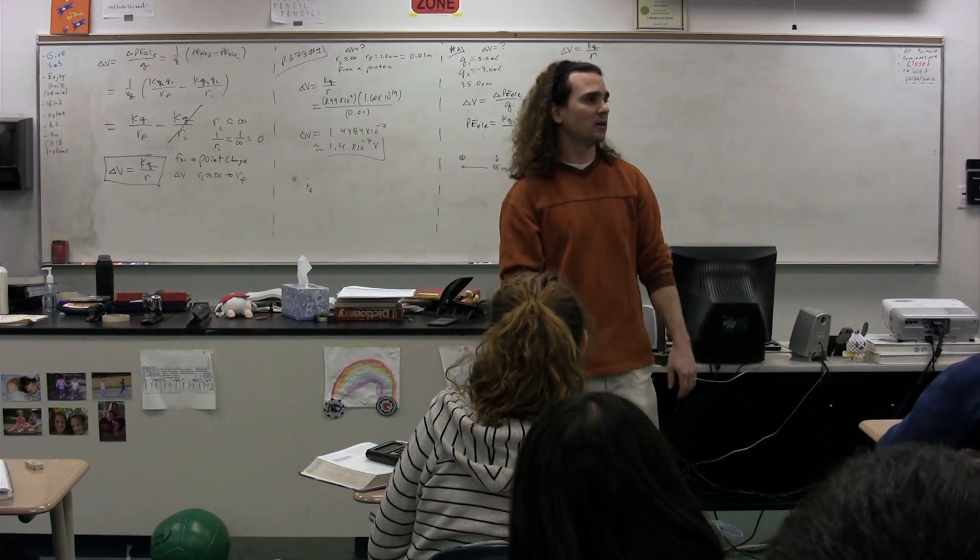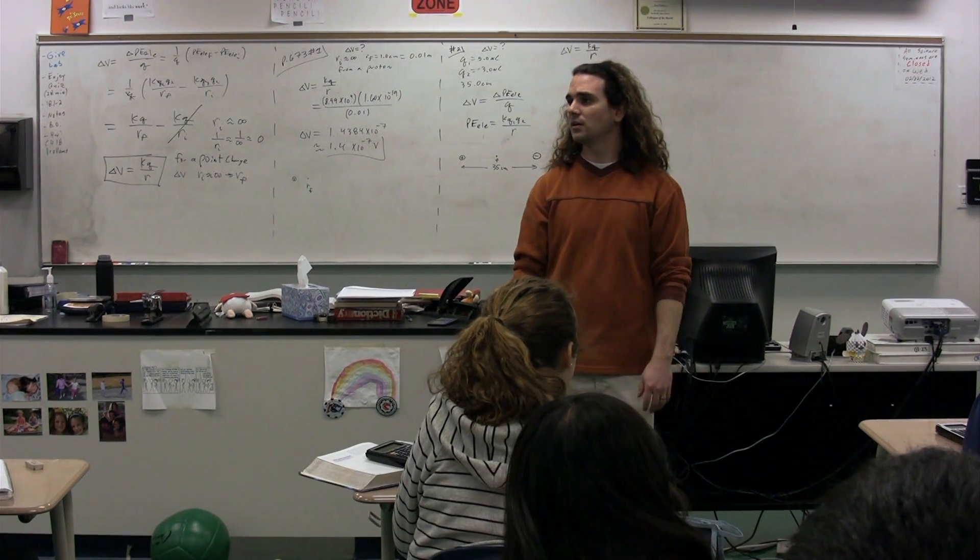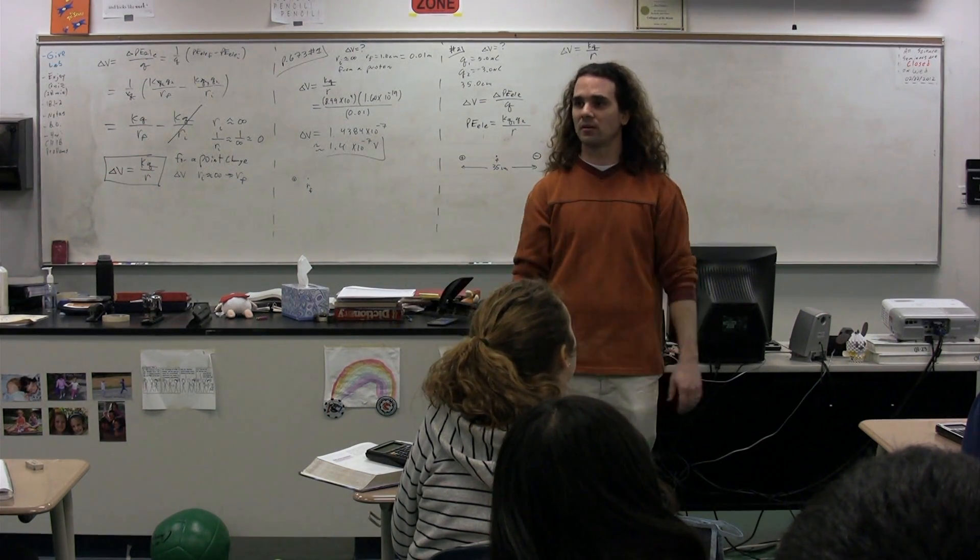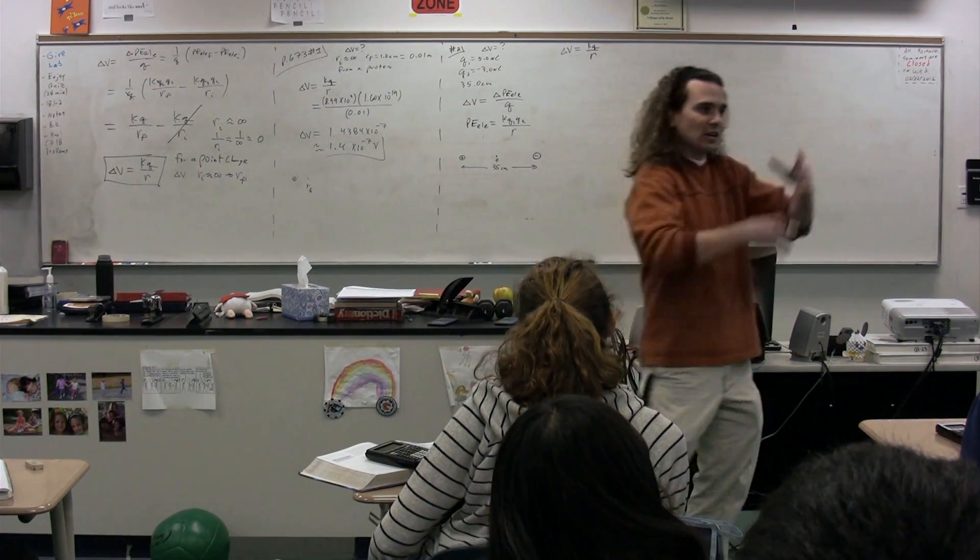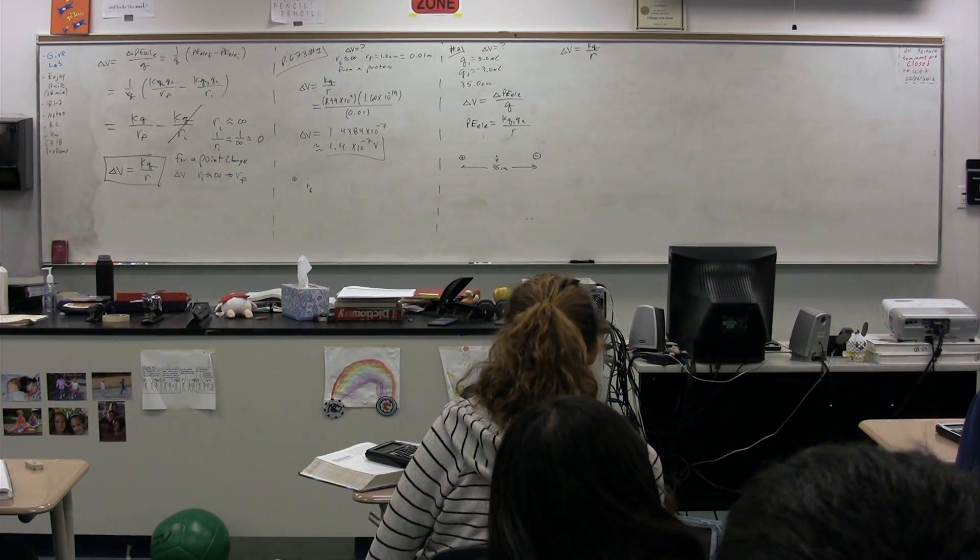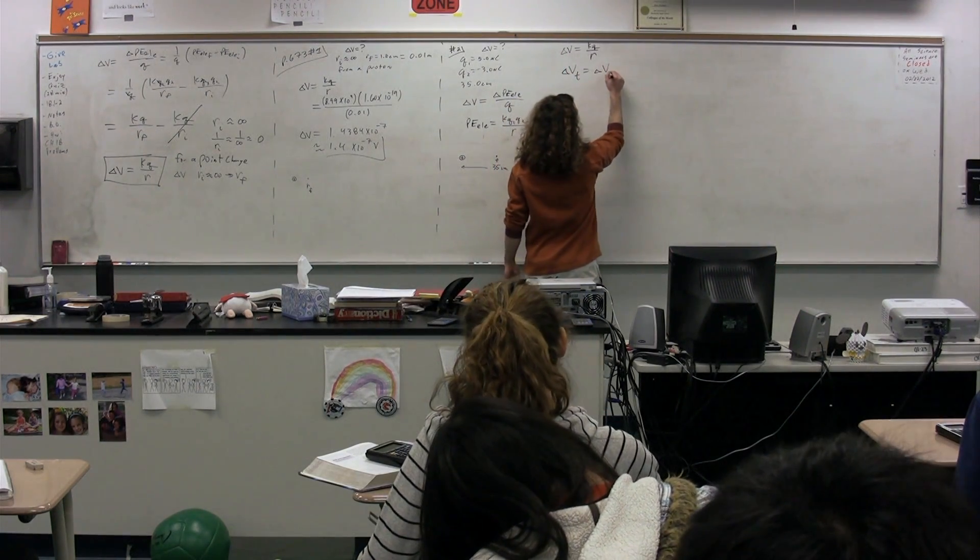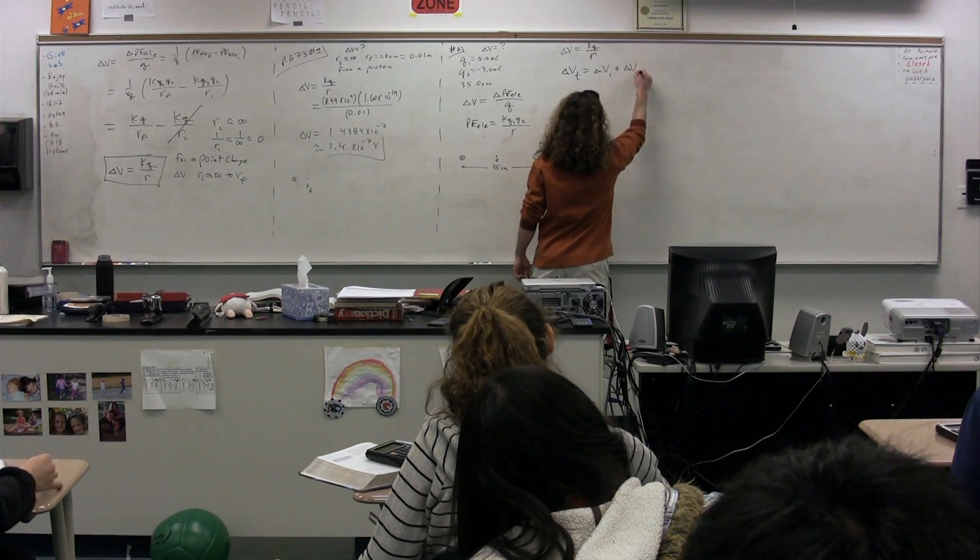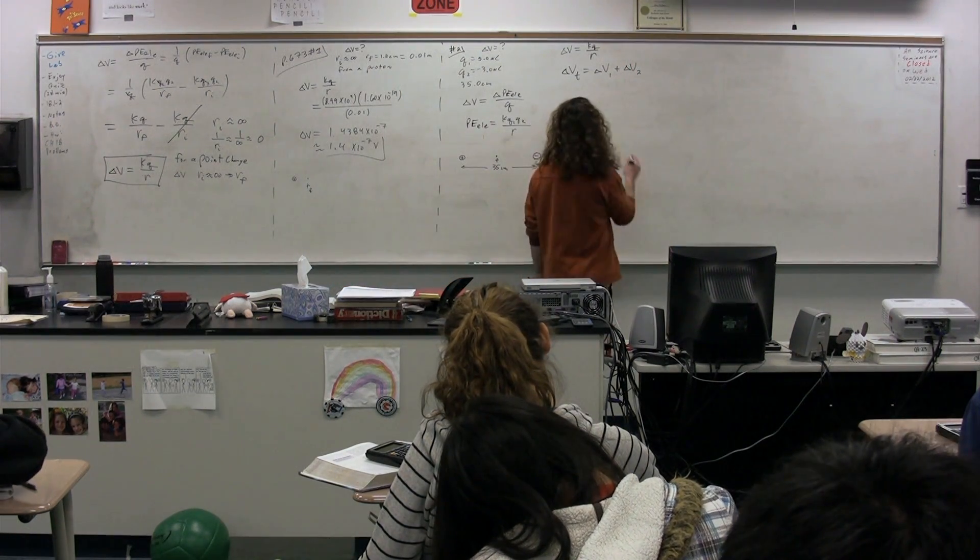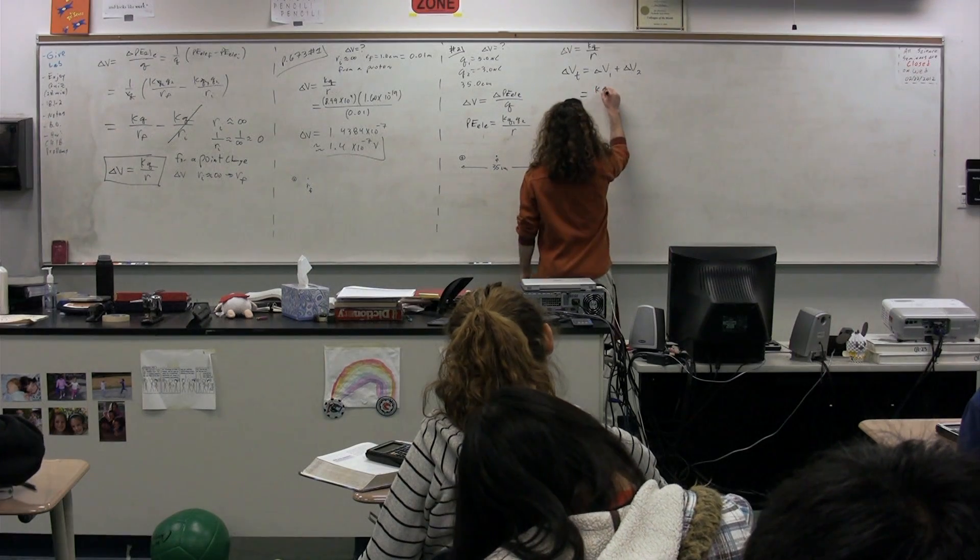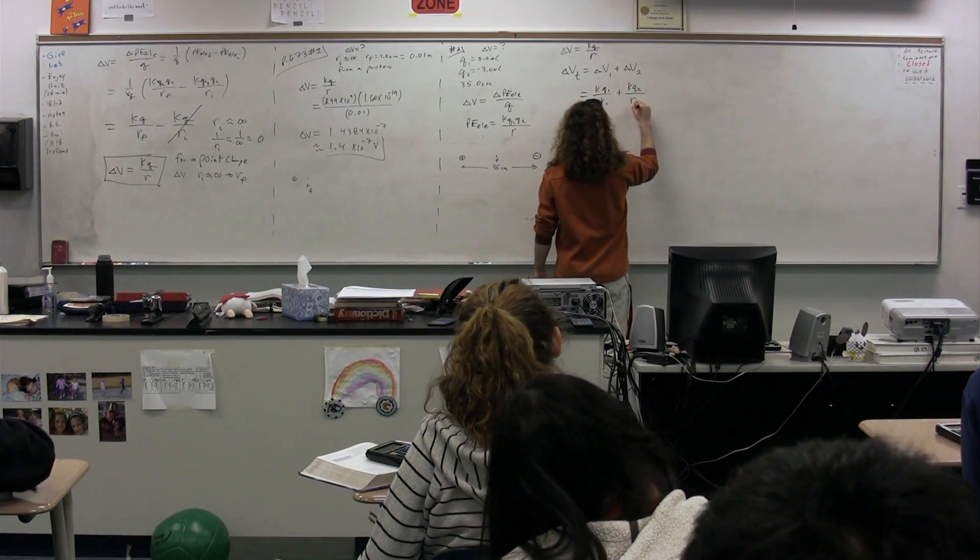Therefore, what can we do? When it's a scalar, what are we going to do if we want to figure it out from both? Just add them together. That's what it means to be a scalar - you can ignore the direction, it doesn't have a direction. So the electric potential difference total is the electric potential difference for the first one plus the electric potential difference for the second one. We get kQ1 over r1 plus kQ2 over r2.